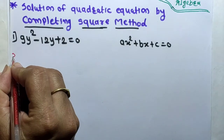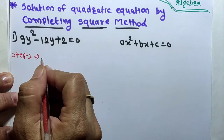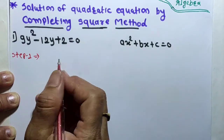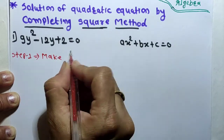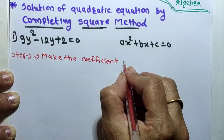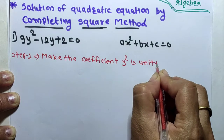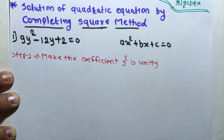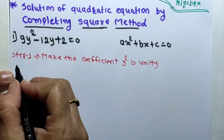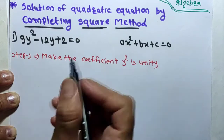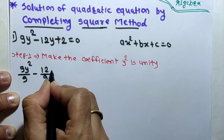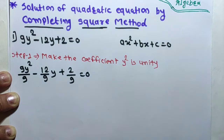Step 1: Make the coefficient of y² equal to unity. The coefficient here is 9, so we divide the entire equation by 9. That gives us: 9y² divided by 9, minus 12y divided by 9, plus 2 by 9, equals 0.